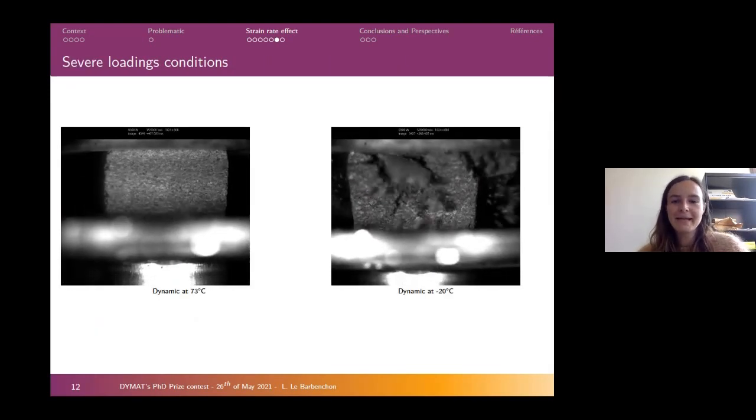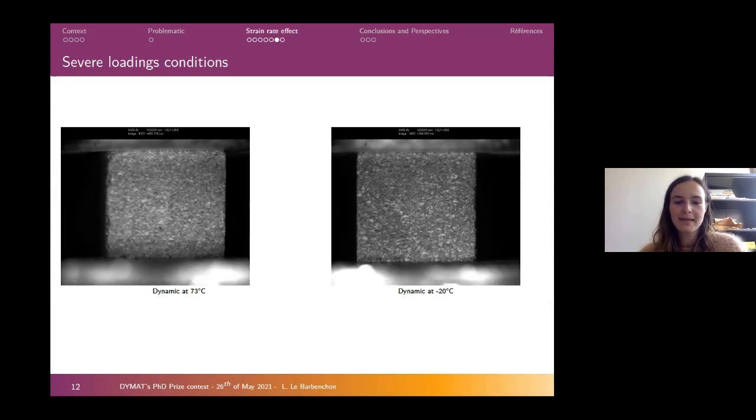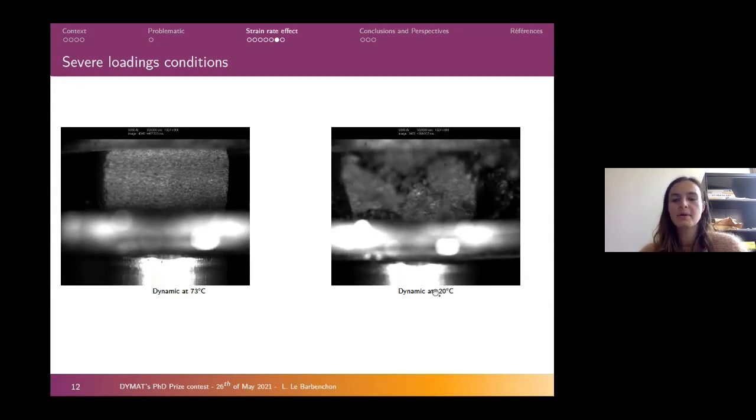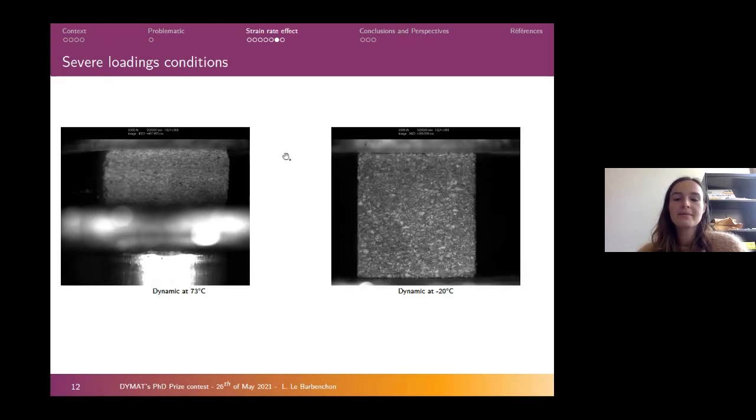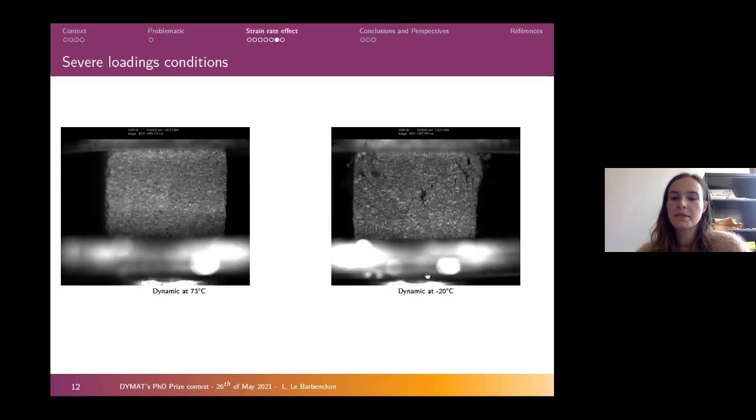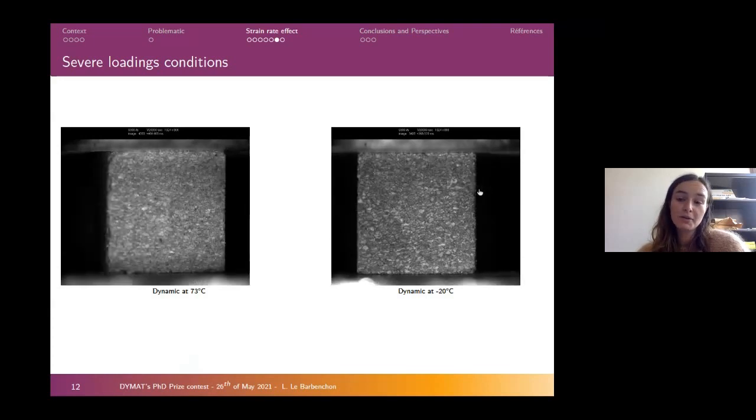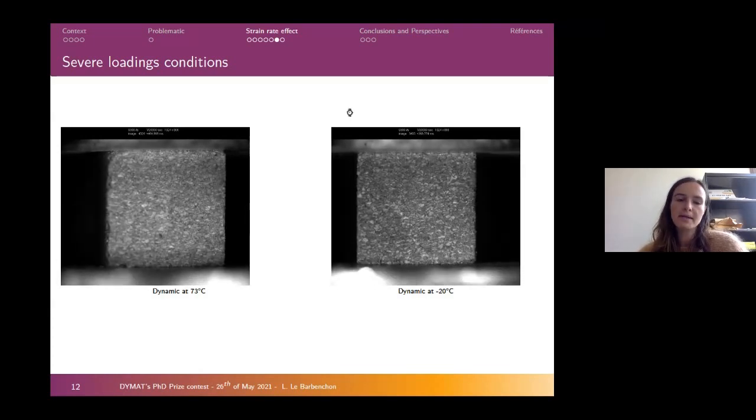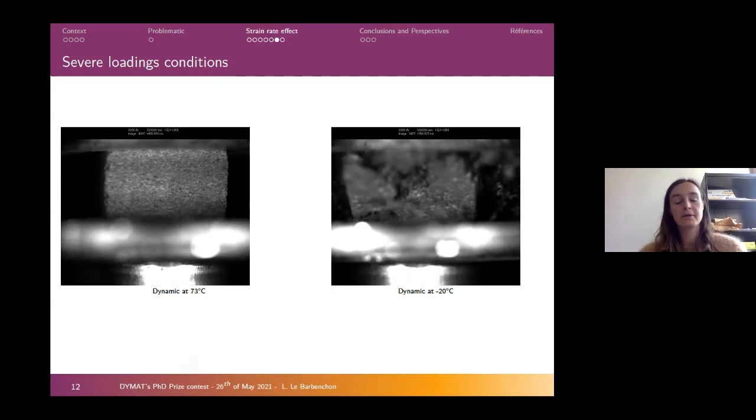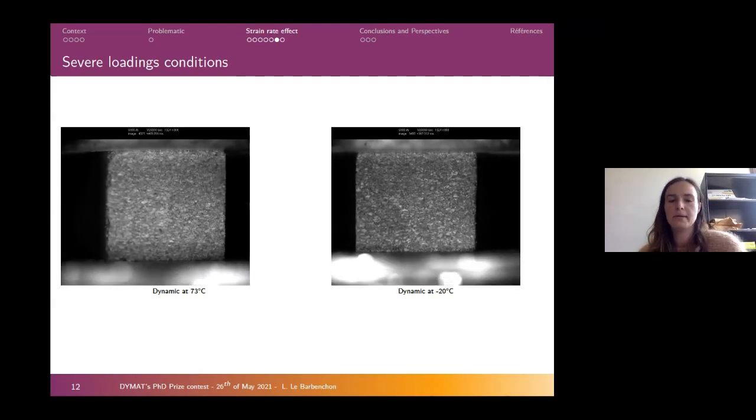As you can see here, it's a dynamic test of cork samples at either high temperature or low temperature. You can see that several mechanisms, especially of fracture, are happening at low temperature. It's very important to characterize our material under strain rate and temperature.